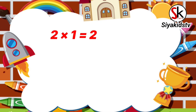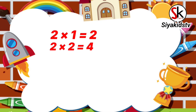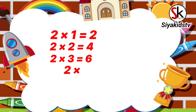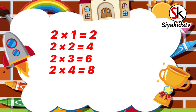2 times 1 is 2, 2 times 2 is 4, 2 times 3 is 6, 2 times 4 is 8, 2 times 5 is 10.